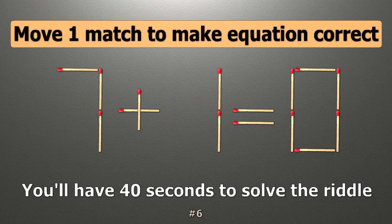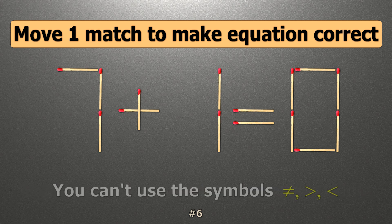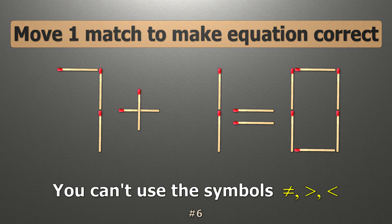We have the equality 7 plus 1 equals 0. Our equality is wrong. We need to move one match to make our equality correct.